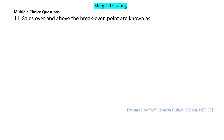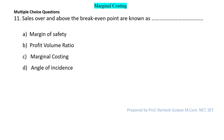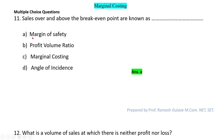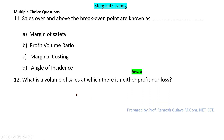The next question says: sales over and above the break-even point are known as what? The break-even point is where there is no profit and no loss. Sales above the break-even point represent the margin of safety. So option A — margin of safety — is the right answer.